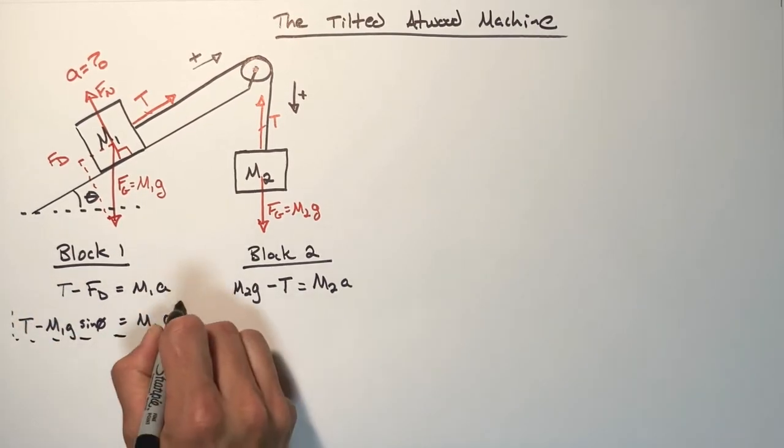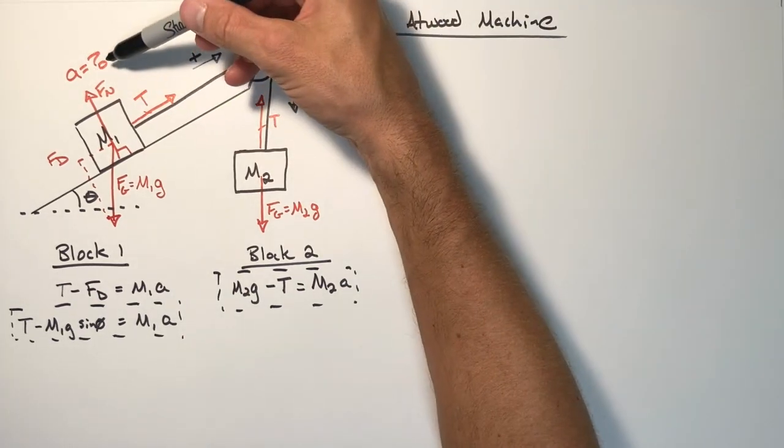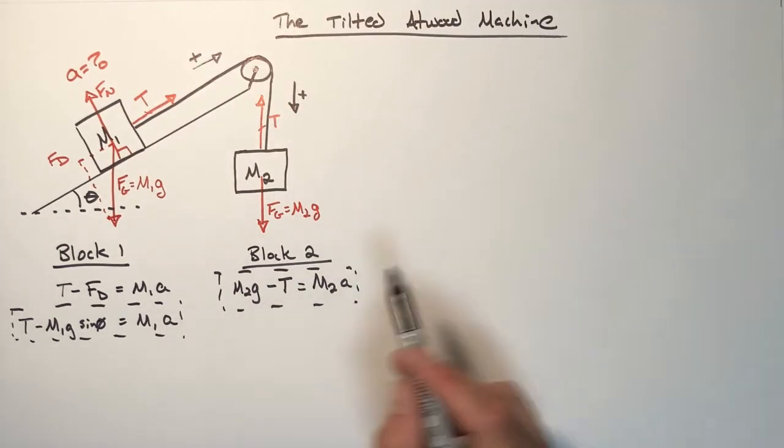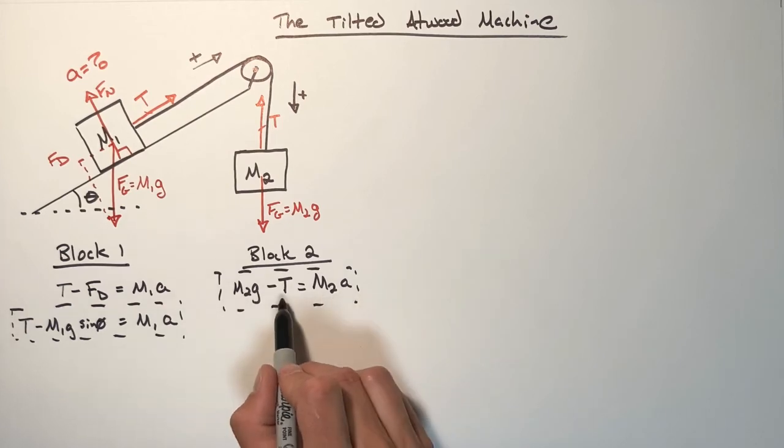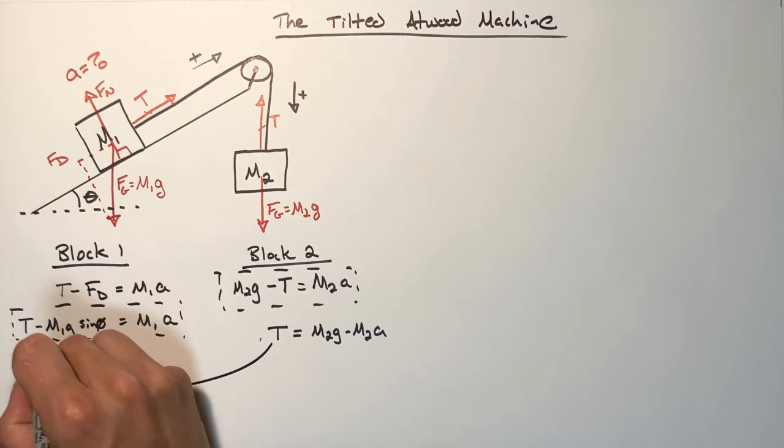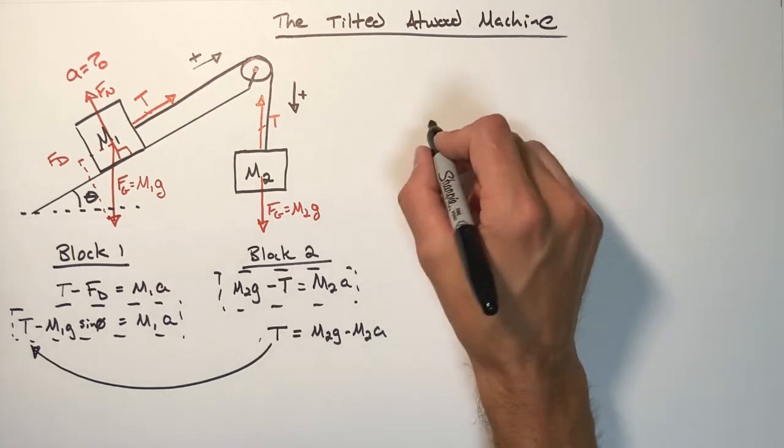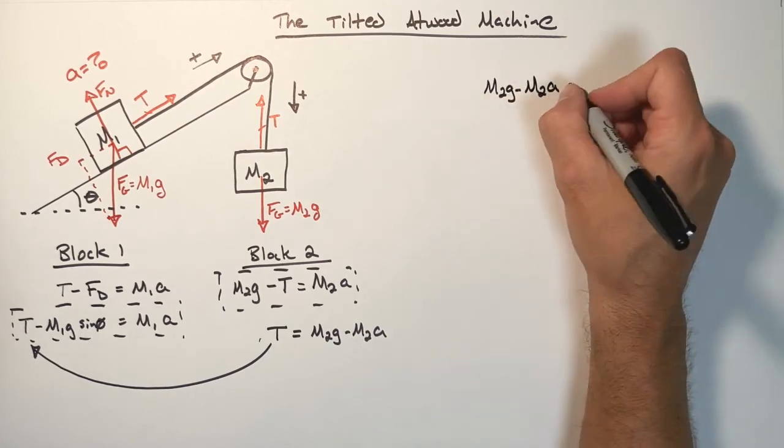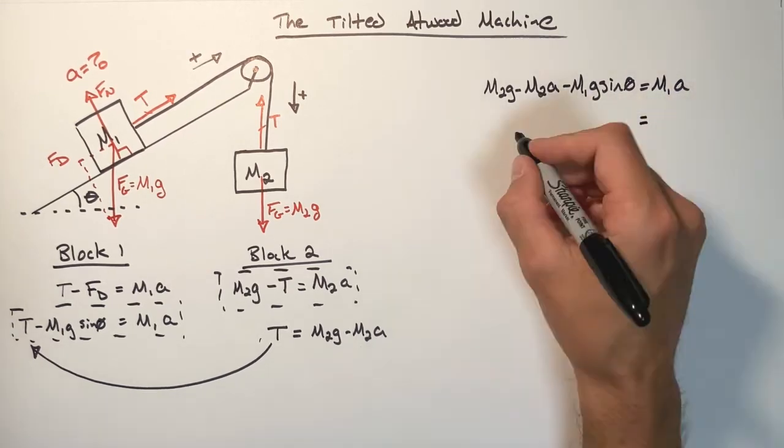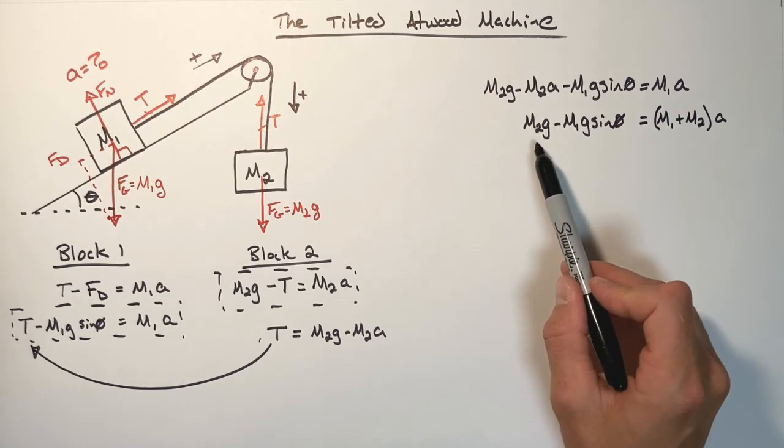Now we have two equations. And all we need to do is just a little bit of algebra in order to come up with our original goal. And that is an expression that will tell us the acceleration of this entire system. To do that, I'm going to rearrange this equation right here for T. I'm going to take this function and substitute it in right there. We're just doing two equations with two unknowns, just like in math class. And we'll clean this up a little bit, moving all the a's to one side.